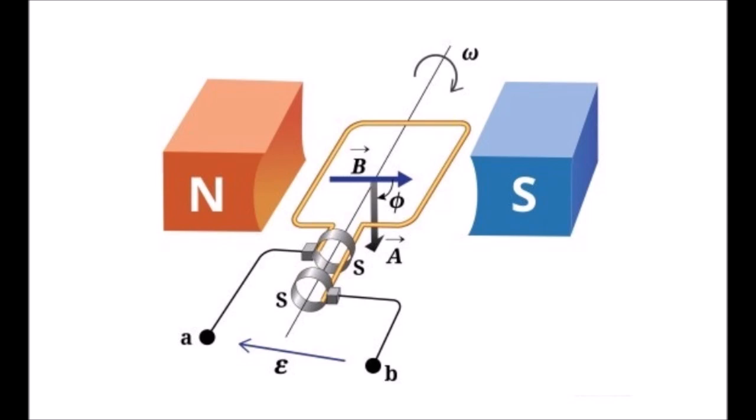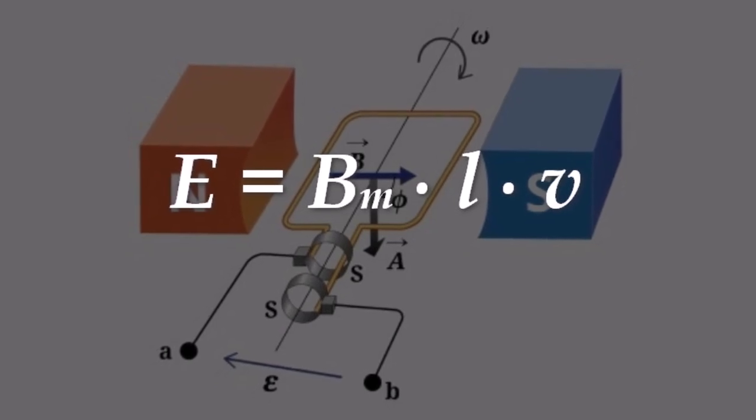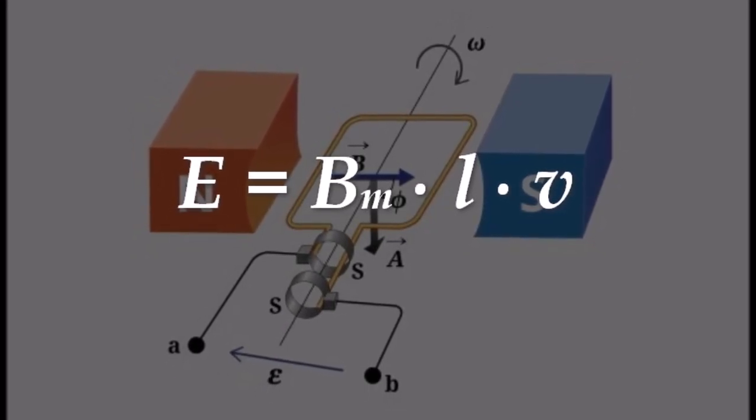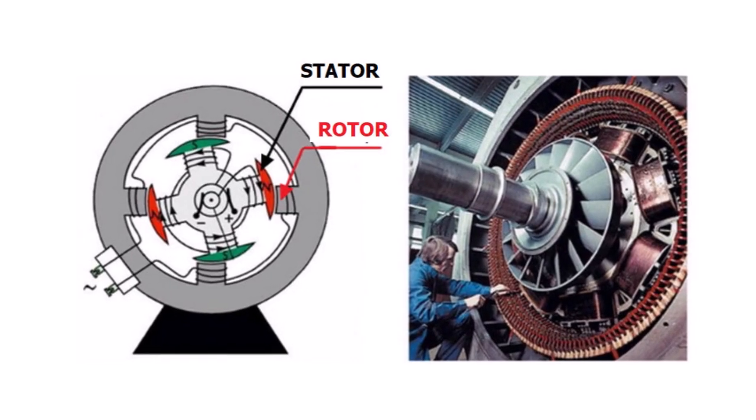There are two formulas for calculating the electromotive force during generation. The first is known to everyone from school. EMF is equal to magnetic induction multiplied by the length of the wire and multiplied by the rate of change of magnetic induction. The question arises.